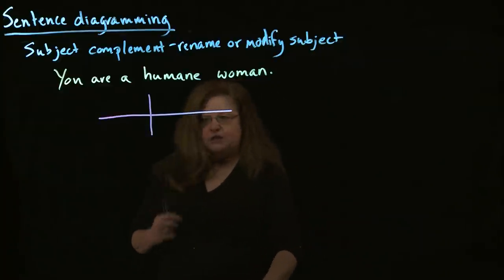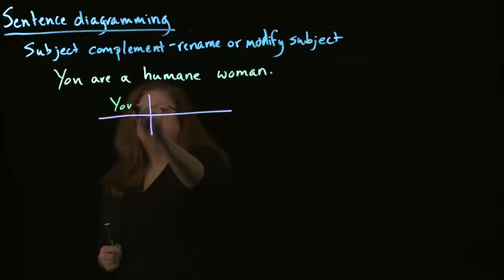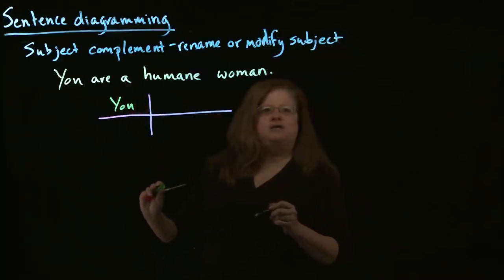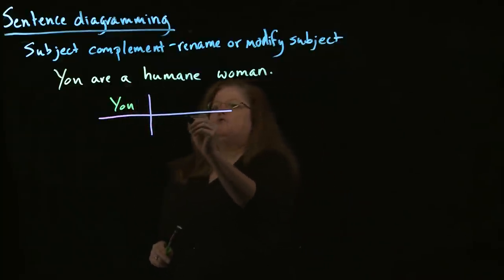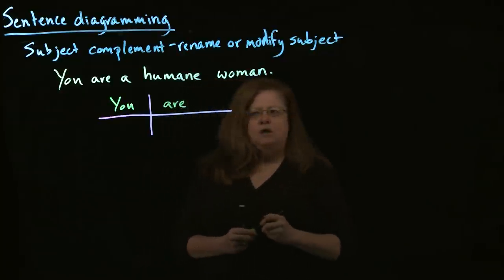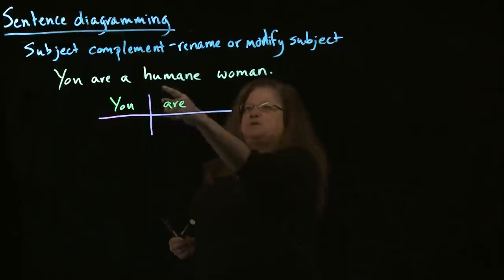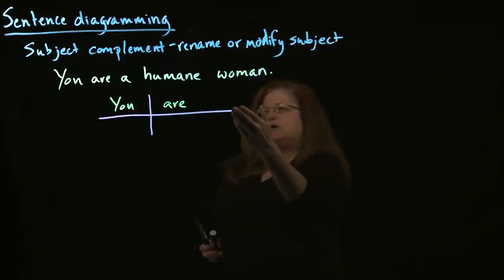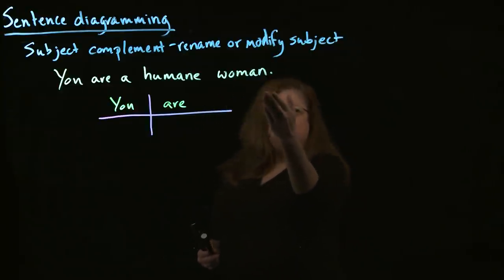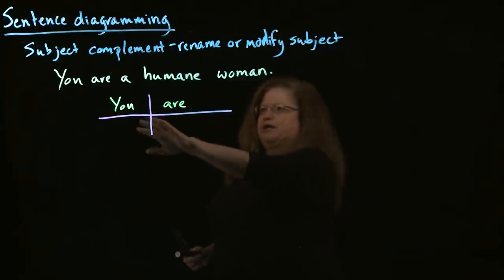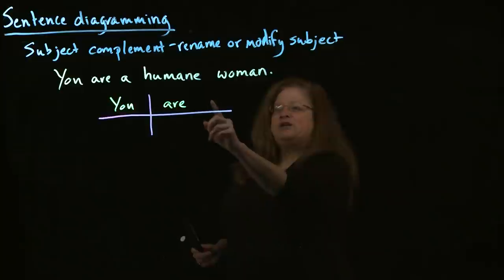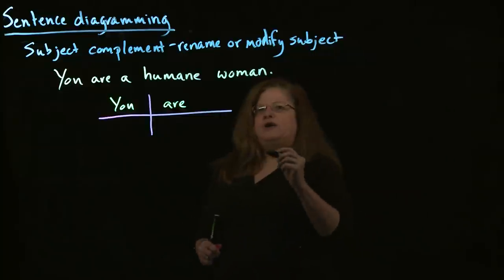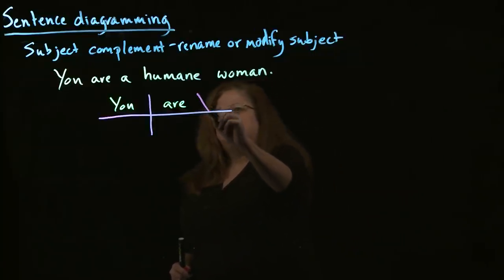The first thing we have is our subject: 'you.' Then we have our verb. In this case, it's not an action verb — it's a state-of-being verb, also known as a linking verb, which is 'are.' Now, what do we do with this piece, 'a humane woman'? It's not really a direct object because we're not really doing anything to it. It's something that's renaming our subject. It's going to go on the main line of the sentence, but you're going to separate it with an angled line.